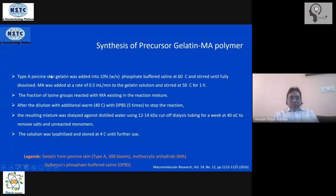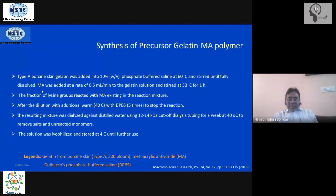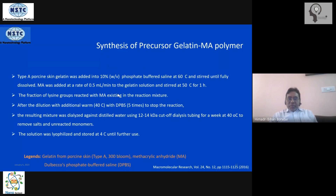Here is the stepwise protocol for the synthesis of the gelatin-MA (GelMA) polymer. Firstly, gelatin is taken at 10% concentration with phosphate buffer saline at 60°C and mixed to make it homogeneous. Then methacrylic anhydride (MA) is added at a rate of 0.5 ml per minute to this solution, and then at a temperature of about 50–60°C, they are mixed for about an hour. In this process, the lysine residues on the backbone of gelatin react with MA, forming a bond that conjugates the two polymers together.